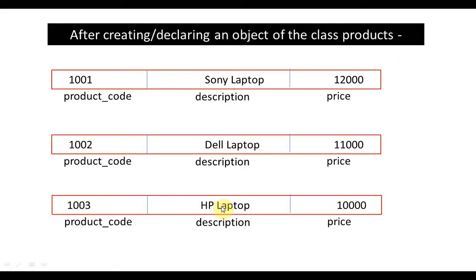So what does that mean? It means there will be as many copies of instance variables as the number of objects. Like in this example, I have shown three objects of the class products. So the instance variables - I will talk about the first instance variable product_code. How many copies does it have? Three, because there are three objects. How many copies of instance variable description? Three. Similarly, three copies of the instance variable price.